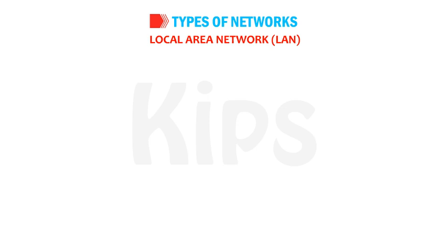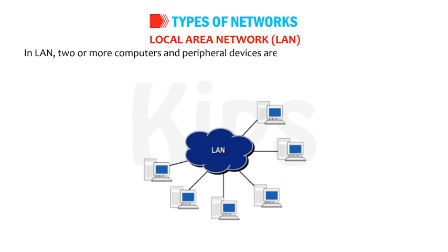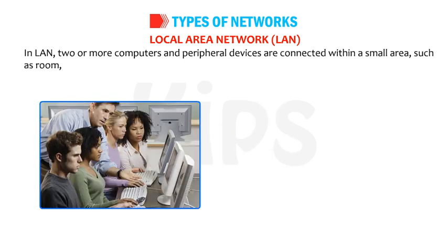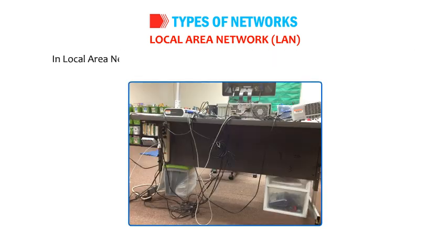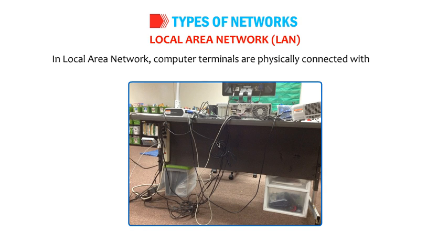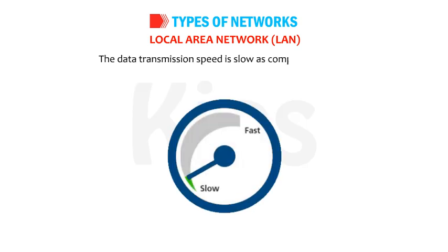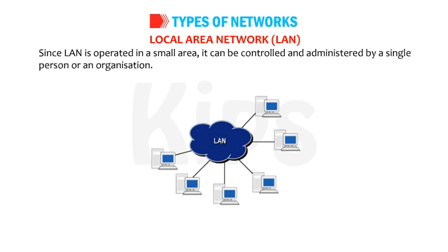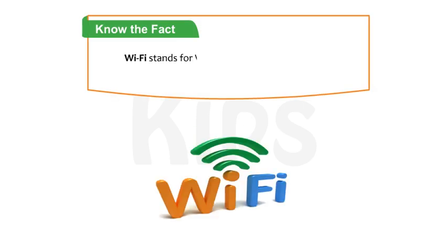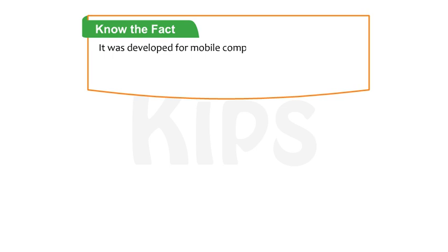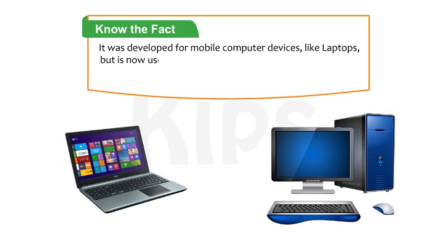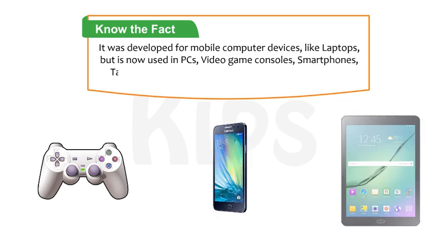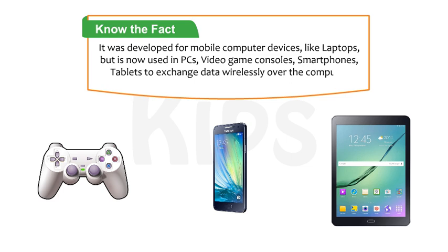Local area network (LAN) — in LAN, two or more computers and peripheral devices are connected within a small area such as a room, office building, or campus. Computer terminals are physically connected with wires, and the data transmission speed is low compared to WAN. Since LAN is operated in a small area, it can be controlled by a single person or organization. Wi-Fi stands for Wireless Fidelity and represents wireless local area network. It was developed for mobile devices like laptops, but is now used in PCs, video game consoles, smartphones, and tablets to exchange data wirelessly, enabling radio signals to travel approximately 300 feet with faster transmission.